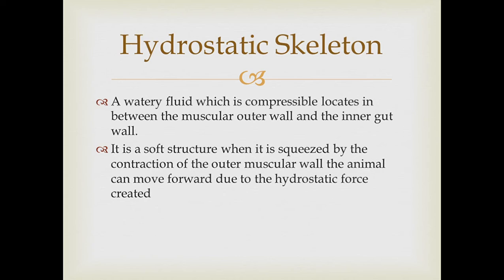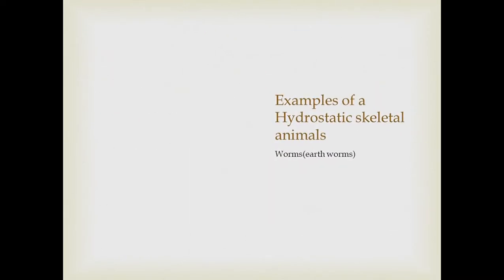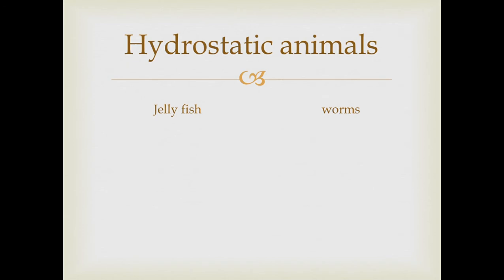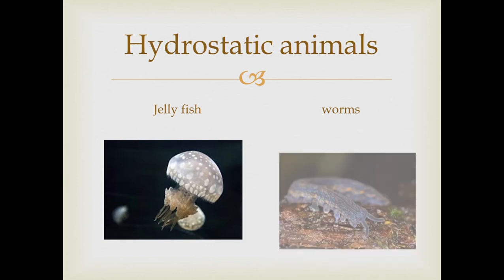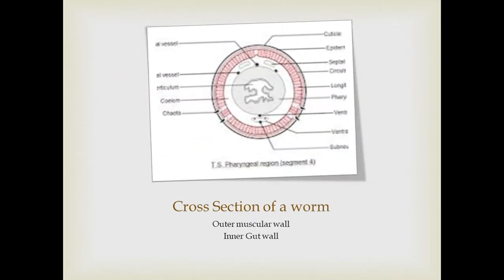Hydrostatic skeleton animals include earthworms — not everyone's favorite — as well as some beautiful animals like jellyfish and marine worms. Looking at a cross-section of a worm, you can clearly see the outer muscular wall and the inner gut wall.